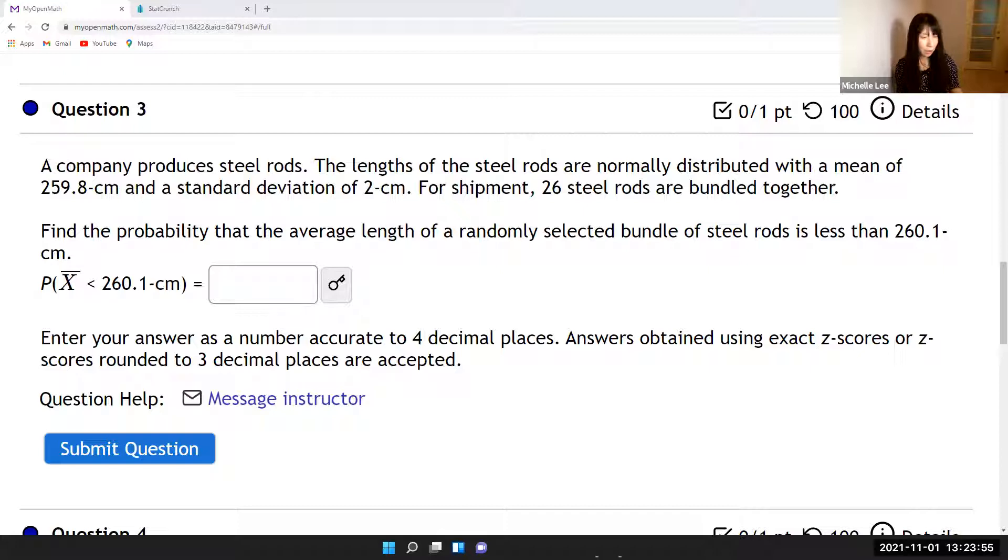So we're going to find this probability of the average length, right? So here, normally we are using the z-score like this. Let me write down z equal to x minus mu over sigma. But in this section, we talk about the sample mean of a sampling distribution.